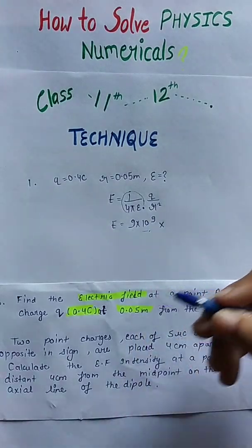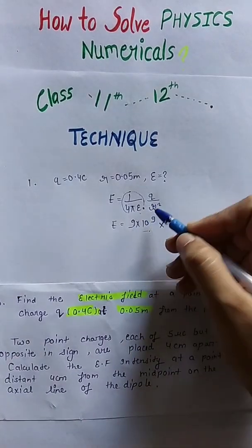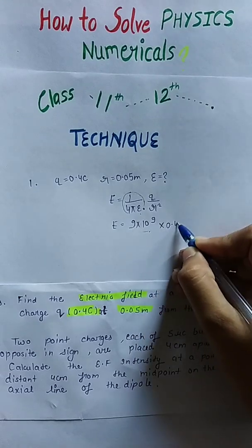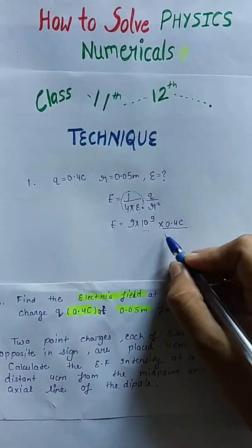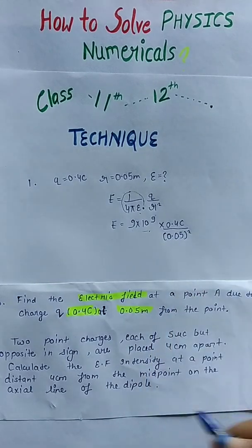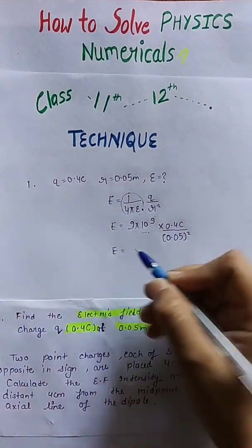What we have to do is learn all the values so that we can easily put them into the formula. The value of q is 0.4 coulomb, the value of r is 0.05 whole square.